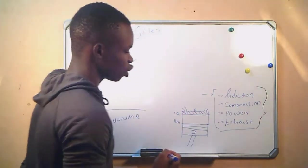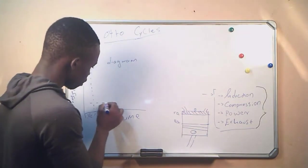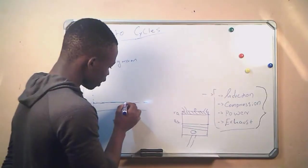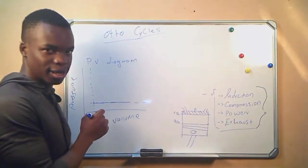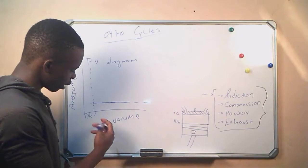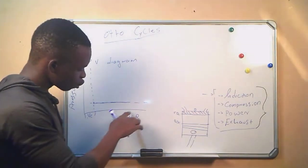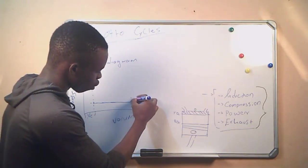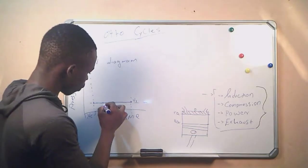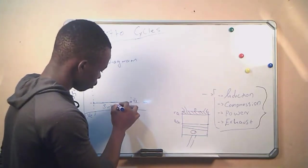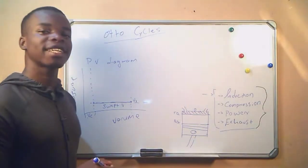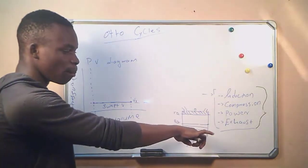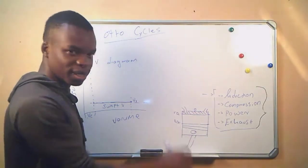So we start with our induction stroke, which will start from here, where the fuel mixture is introduced into the cylinder. We can see that the volume is increasing from here to here, and this is what we are going to call V1. This is our swept volume — the effective volume introduced as the piston moved from the top dead center to the bottom dead center.